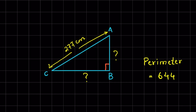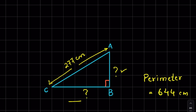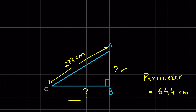Given a right angle triangle ABC, the side AC which is the hypotenuse is 277 cm and the perimeter is 644 cm. We have to find the other two missing sides BC and AB. Let's consider the side AC (the hypotenuse) as lowercase c, AB as lowercase a, and BC as lowercase b.